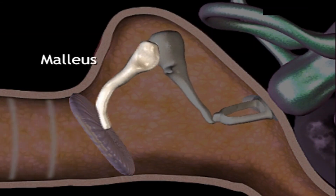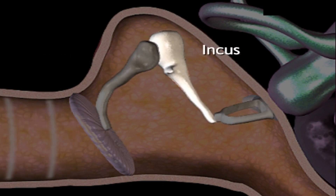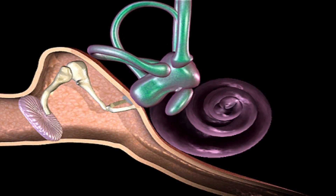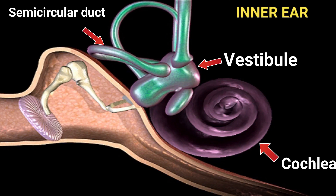The eardrum vibrates when sound enters. In the inner ear, there are three parts: the vestibular, cochlear, and vascular duct — referred to as a duct structure.